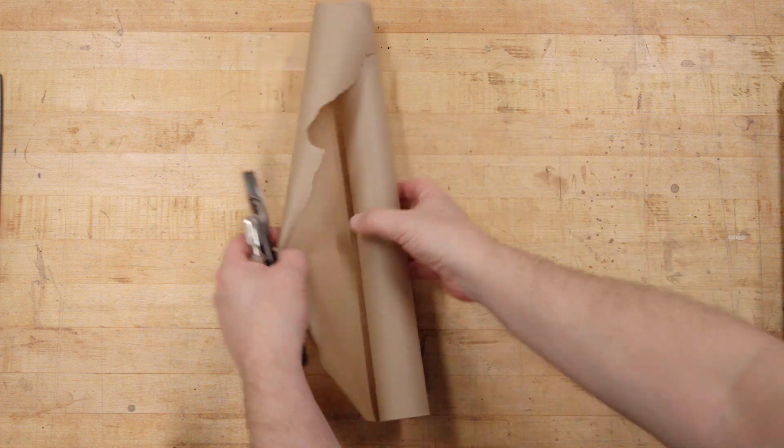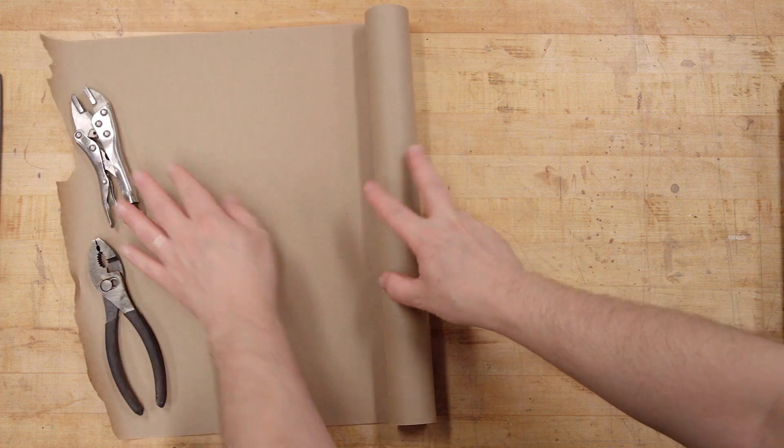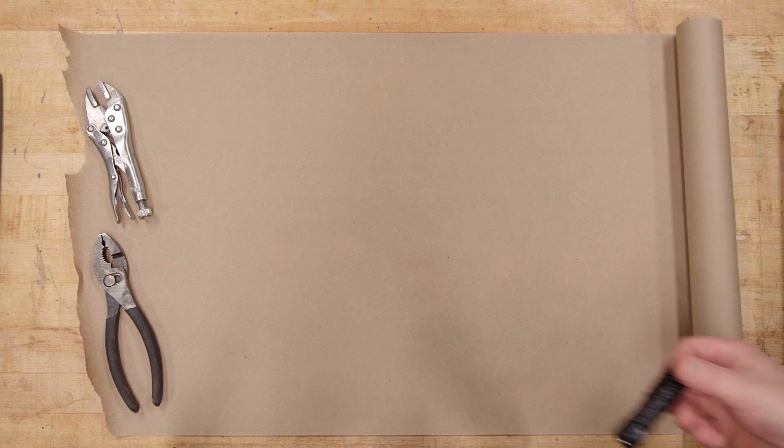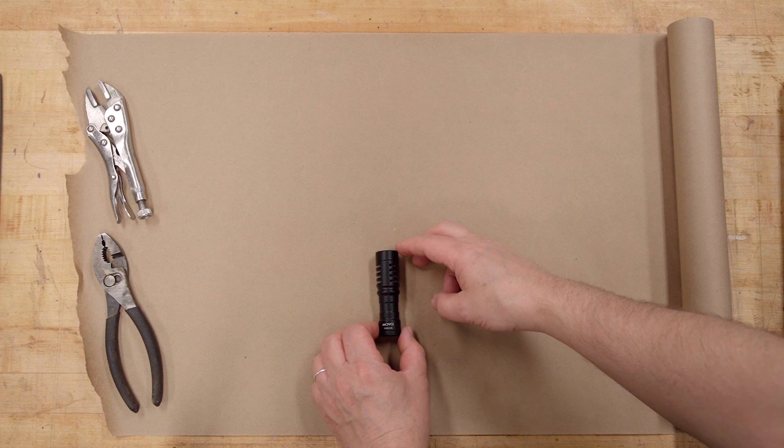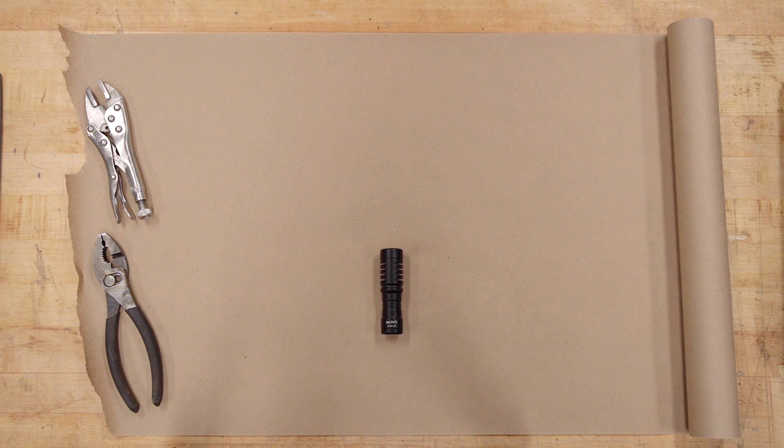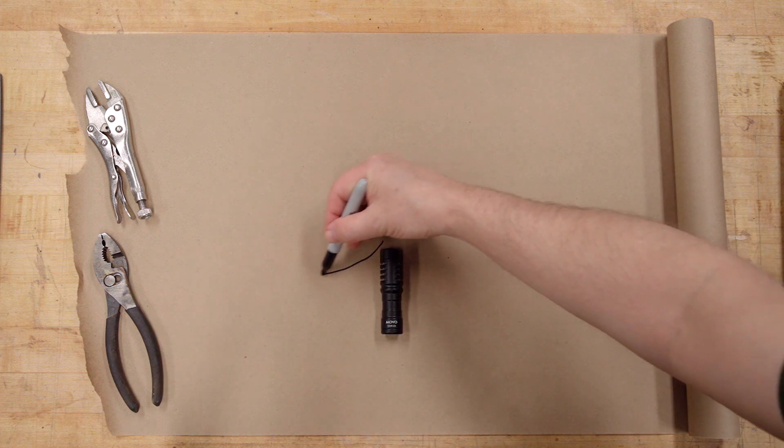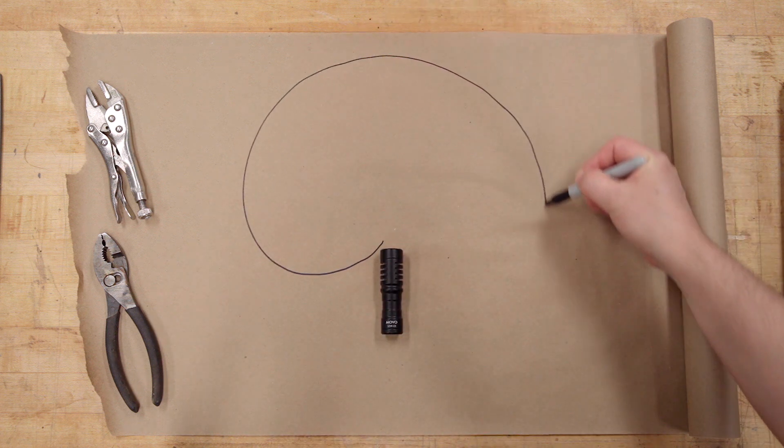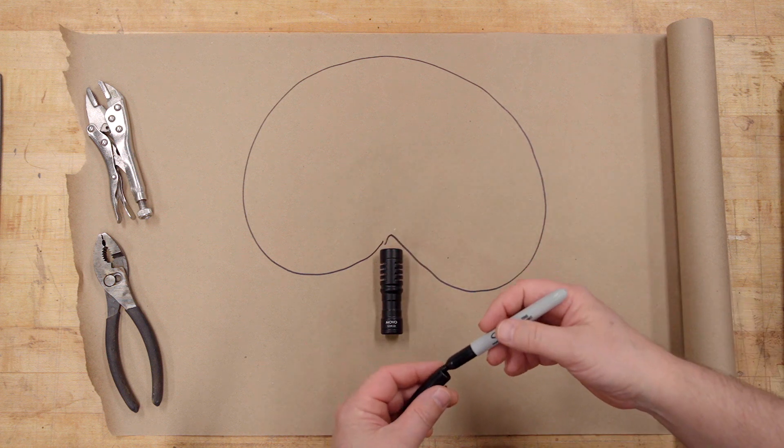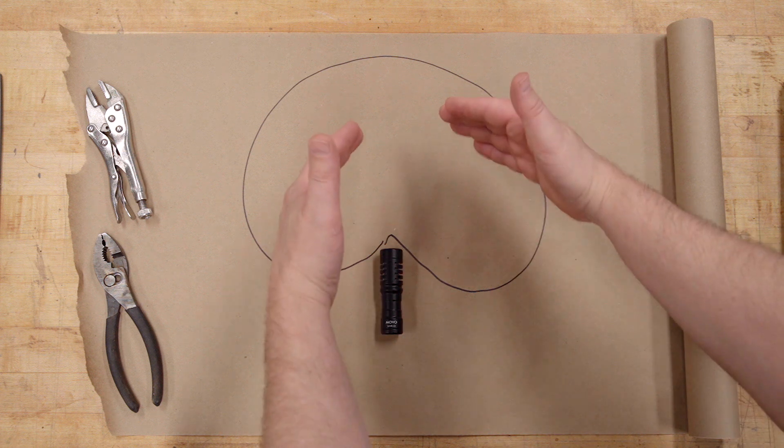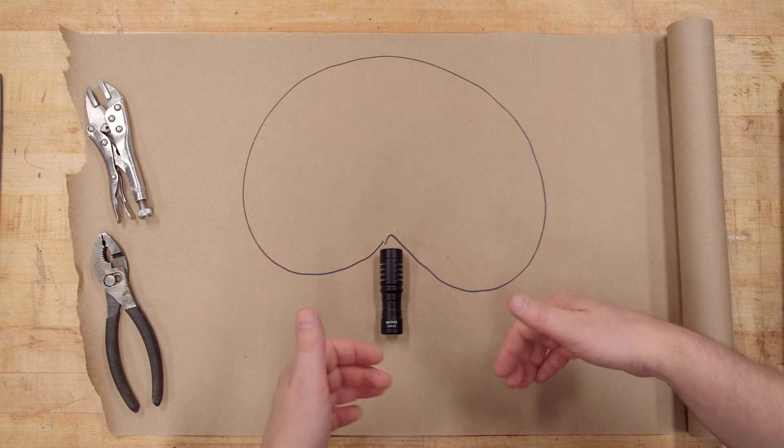Before we get into this build, it's important to talk just for a minute about microphone polar patterns. Polar patterns are just the area in which a microphone picks up the majority of its sound. The Movo VXR10 is a cardioid microphone. Cardioid refers to the area in which this microphone picks up frequencies, so it picks up frequencies in what looks like an upside down heart shape.